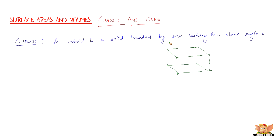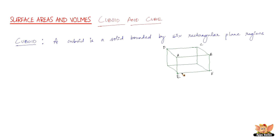Cuboid — a cuboid is a solid bounded by six rectangular plane regions as shown in the figure. You can see I'll just name the vertices: A, B, C, D makes one plane region; A, B, E, F makes another; E, F, G, H is another; B, H, C, G is another; E, F, G, H is another; A, D, H and G, F, B, C make the remaining. In all, six rectangular plane regions forming a solid is a cuboid.